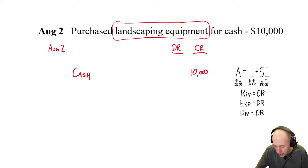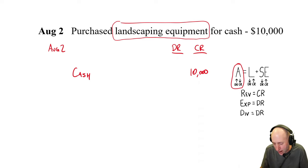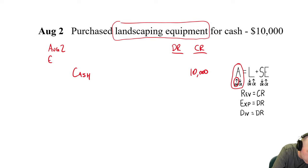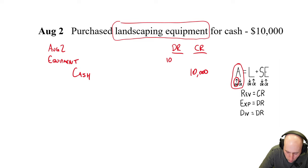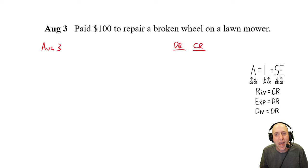August 5th: purchased and used fuel in the lawnmowers, cost $150 cash. Did cash change hands? Yes. Cash is an asset and it's decreasing. If we were buying the fuel and storing it for later, we'd debit a fuel supplies asset account. But more likely we put the fuel in the mower and used it right away. In that case, we debit fuel expense — this is a cost of running a lawn mowing business. So: credit cash $150, debit fuel expense $150.